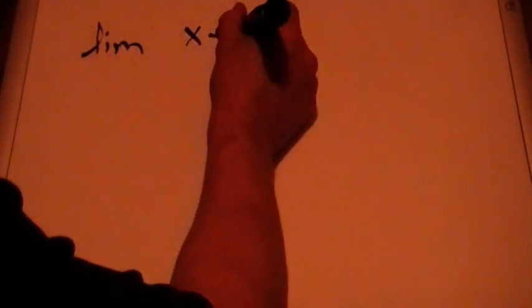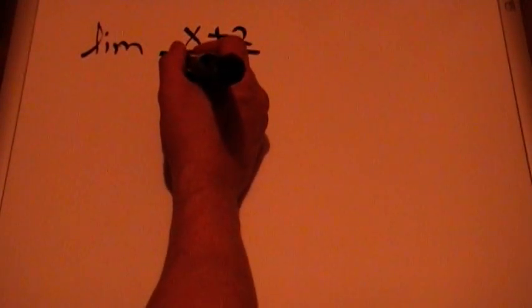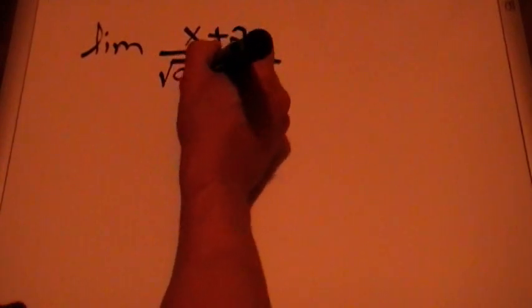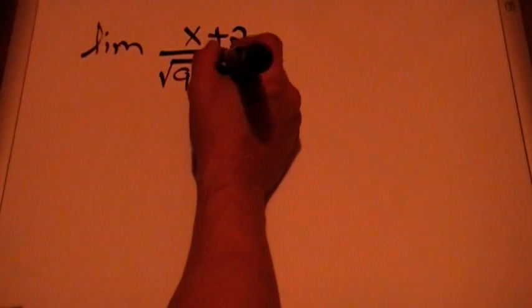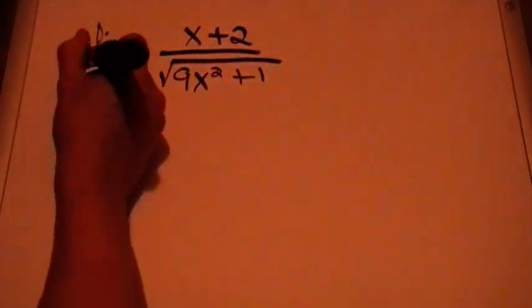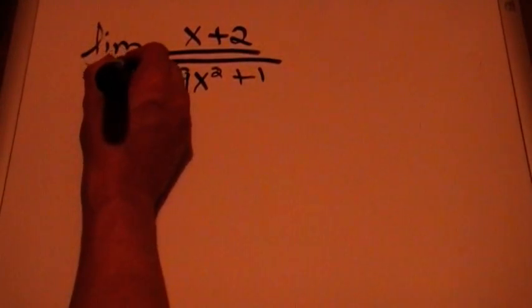Hello everybody. Today I'm going to be working with the limit of (x + 2) over the square root of 9x² + 1, when x approaches infinity.